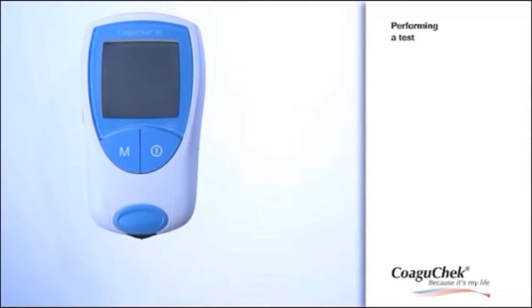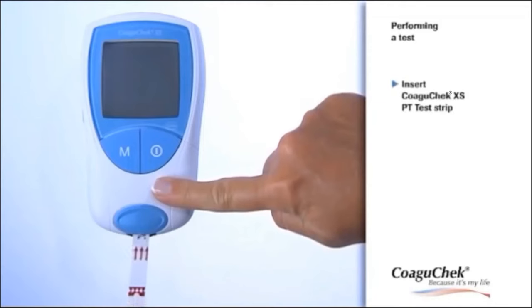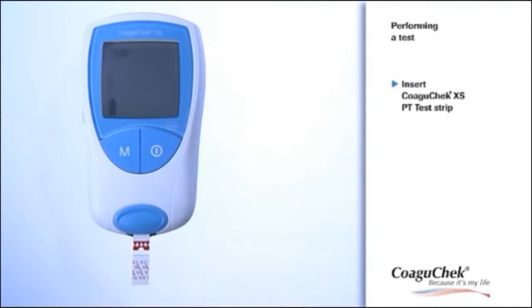Place the meter on a level, vibration-free surface or hold it in your hand so it is roughly horizontal. Insert a test strip and hold it so the labeling is facing upwards. As you will see, the meter turns on automatically. Please remember to close the strip container again.